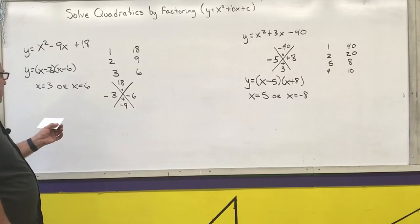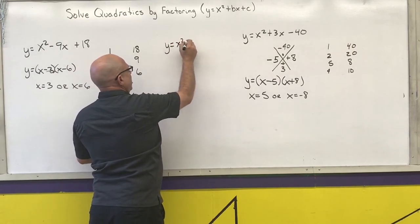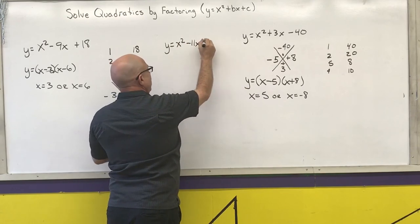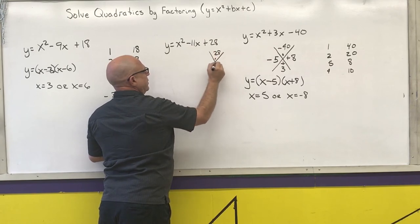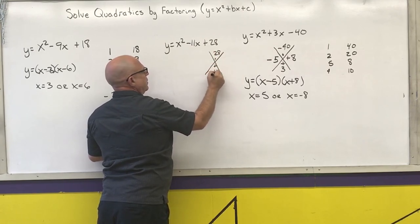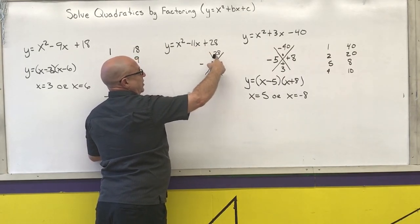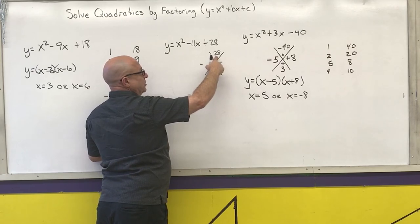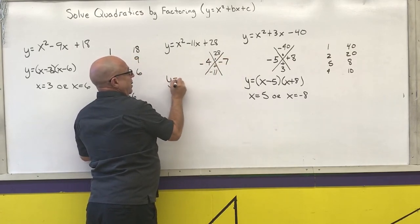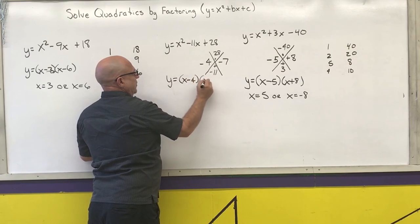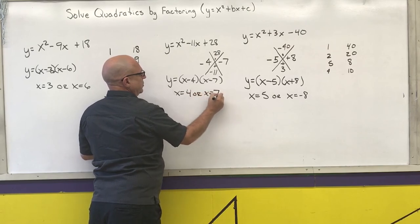Last example: y equals x squared minus 11x plus 28. I need two numbers that multiply to 28 and add to negative 11 — both signs are negative. The candidates are 2 × 14 or 4 × 7; since 4 + 7 = 11, I use 4 and 7. The factored form is (x − 4)(x − 7), giving x = 4 or x = 7.